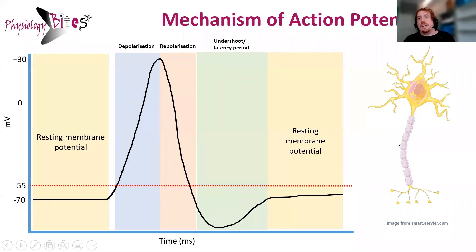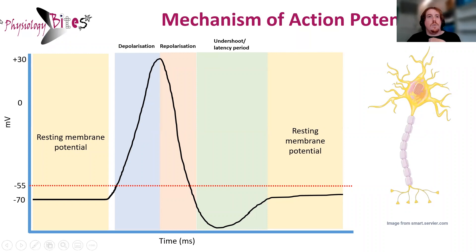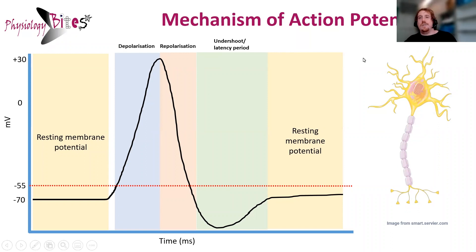And this is incredibly quick. To give you an example, some of the large myelinated neurons in the body can transmit a signal at 50 meters per second. So all of this — what I've shown to you, something which took me several minutes to explain — all happens in a tiny fraction of a second. All right, so there it is. There's action potentials.